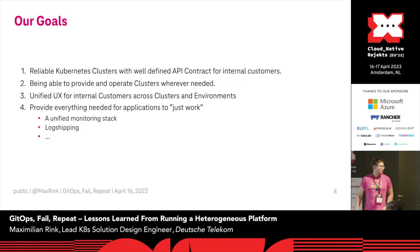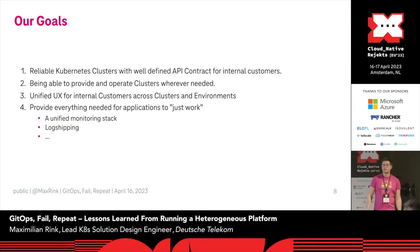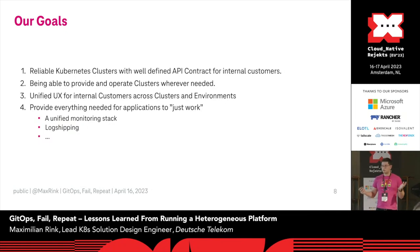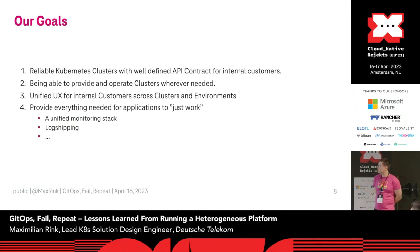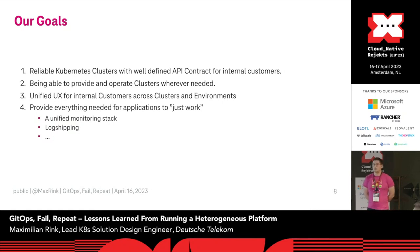What are our goals? We want to build reliable Kubernetes clusters with a well-defined API contract for our internal customers — we're internal only. We want to provide clusters wherever we need them, from core data centers to edge sites. We want to present a mostly unified experience so customers don't need to care which cluster or environment they're on. On top of Kubernetes, we provide a monitoring stack, a log-shipping daemon that collects all application logs, and we handle the complete ingress side. You basically just deploy an application into the cluster, and everything else is managed by us.